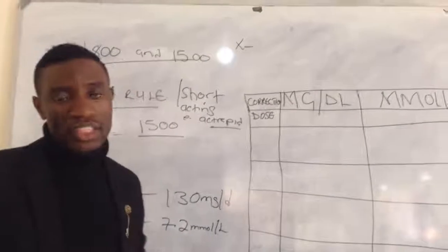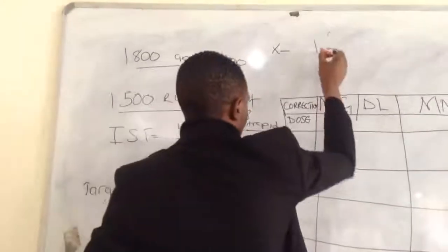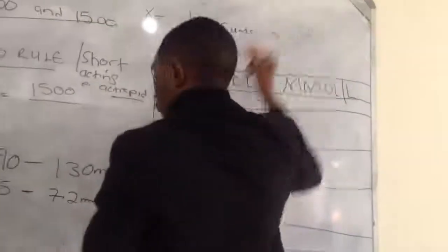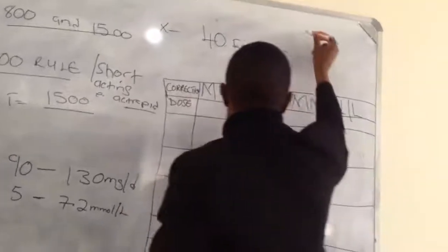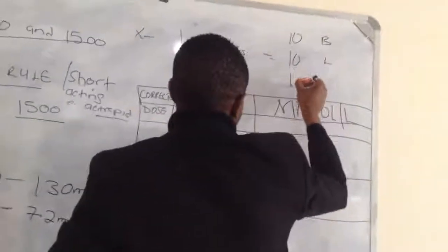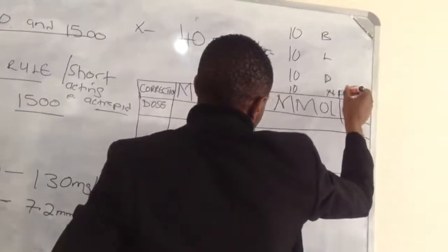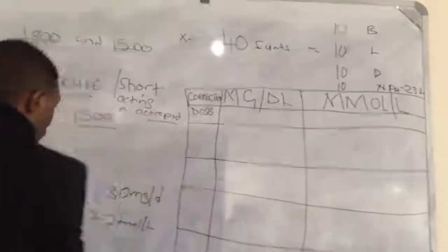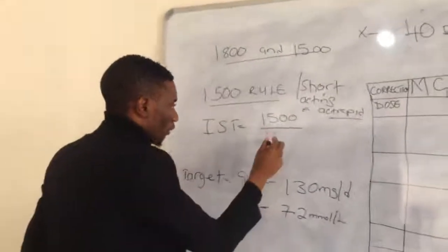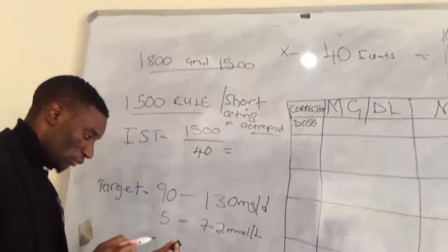Let's assume we have Patient X, who has been on insulin for some time — about a year — and is now stabilized on 40 units per day. They take 10 units at breakfast, 10 units at lunch, 10 units at dinner, and 10 units of NPH at 23:00 hours, totalling 40 international units in 24 hours.